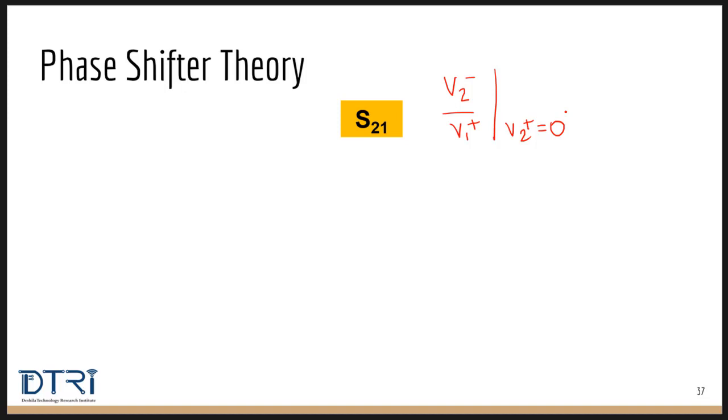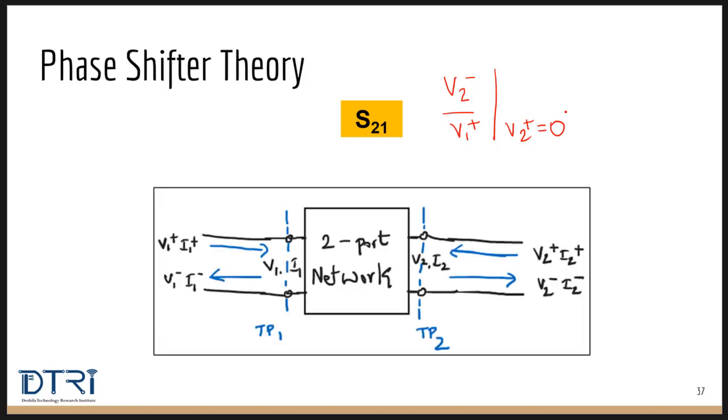S21 is a ratio of V2 minus by V1 plus with the second port perfectly matched. So if you look at this image of a two port network, it means that S21 is basically the ratio of output voltage to input voltage.